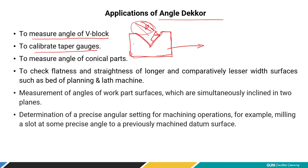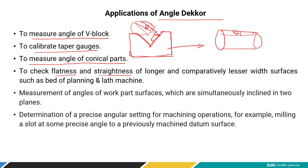The angle decker is used to measure the angle of conical surfaces — which are cylindrical in cross-section but have some taper. It is also used to check the flatness and straightness of longer surfaces with comparatively lesser width.